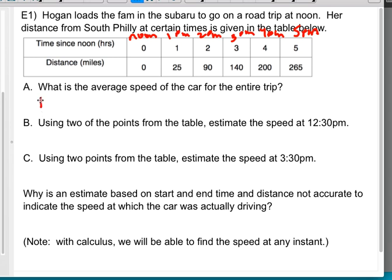So essentially, if you think back to maybe third grade, if I do distance divided by time, that's going to be my speed. So my average speed over that time is going to be the change in distance over the change in time. So my change in distance was 265 minus zero, because I went 265 miles. And the change in time was 5 hours.